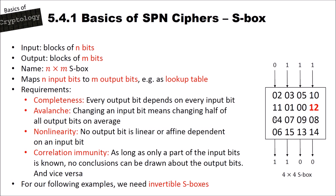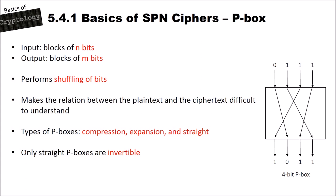A permutation box (P-box) also takes a block of n bits and outputs n bits, performing a shuffling of those bits. For example, with four input bits they get shuffled around — bit 0 goes to position 2, bit 1 to position 4, bit 2 to position 3, bit 3 to position 1. This is easily implemented in hardware by wiring. P-boxes make the relation between plaintext and ciphertext difficult to understand.